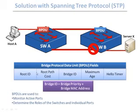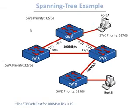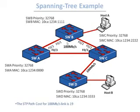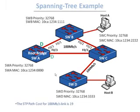Now let's see an example of configuring spanning tree. In this topology, all switches have the default priority, so we determine the root bridge by MAC address. Switch A has the lowest MAC address of all switches, so it becomes the root bridge. Because all ports on the root bridge are designated forwarding — open to receive traffic — both ports on switch A are designated forwarding.